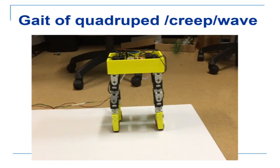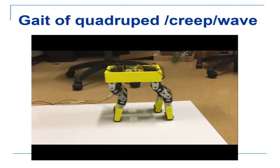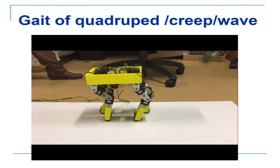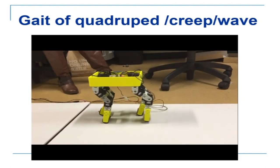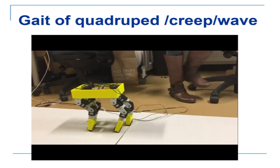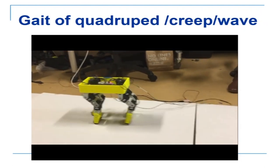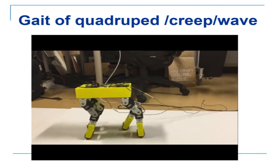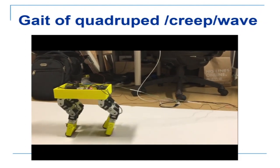A simple student-built quadruped example demonstrates the creep gait: at any one instant, one leg moves forward while three legs are on the ground, then all four are on the ground, then the next leg goes in air. This is the creep or wave gait. You can also have diagonal gait as in Big Dog, but it is more difficult to control.